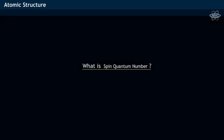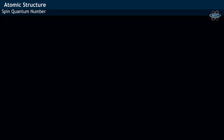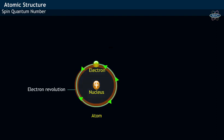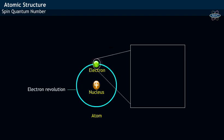What is spin quantum number? In an atom, electron revolves round the nucleus. During its revolution, electron spins on its own axis.